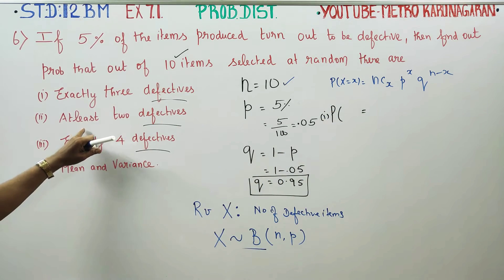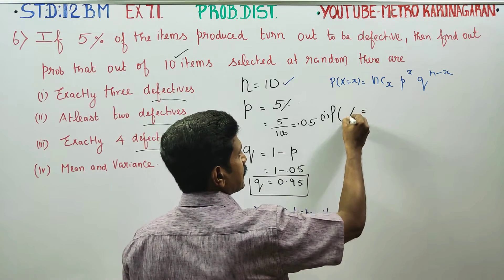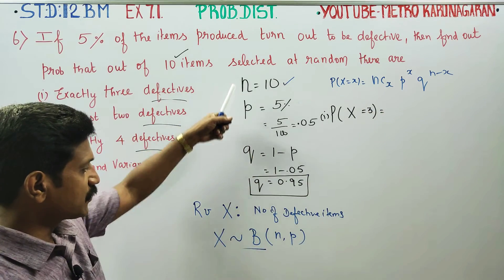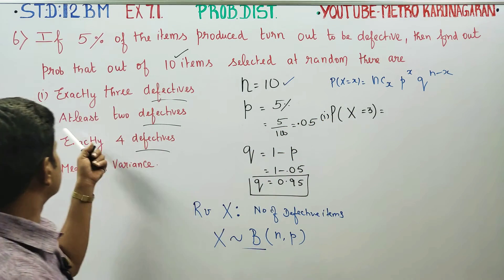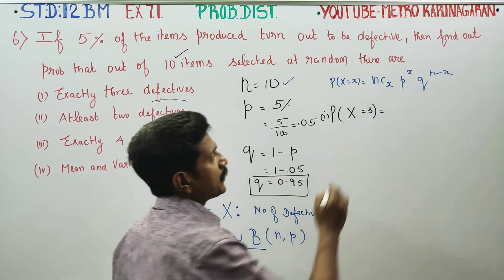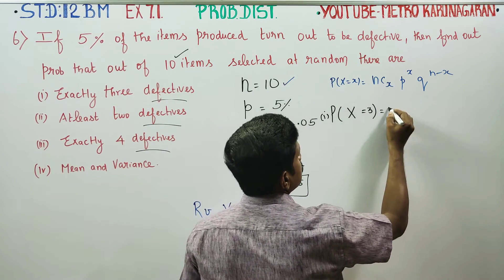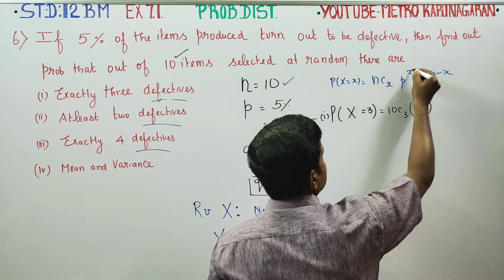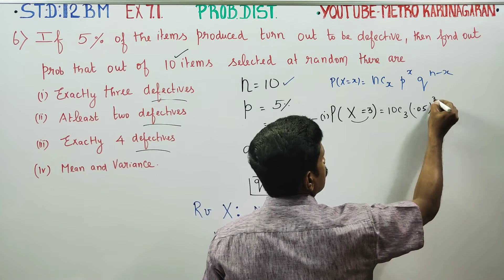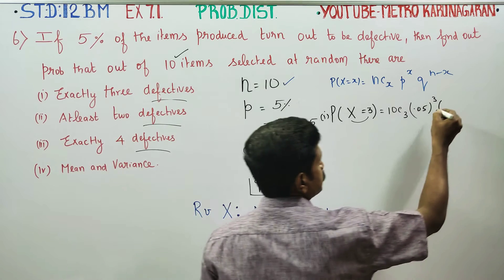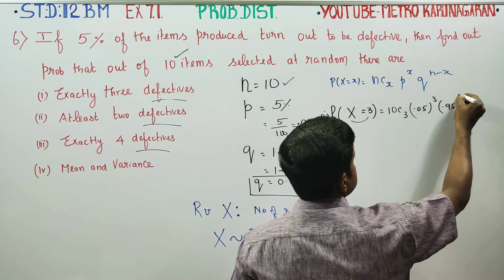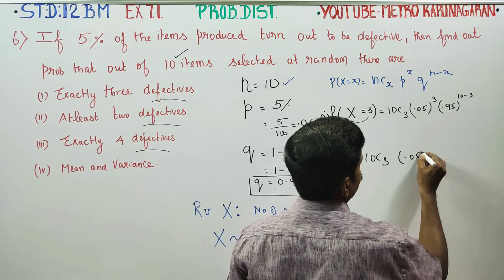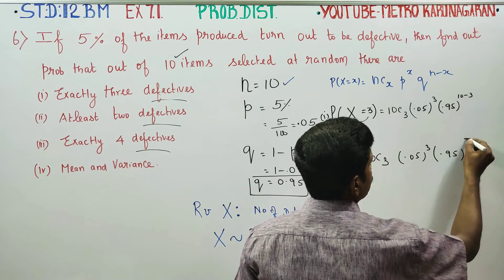The first subdivision is exactly three defectives, that is x equal to 3. Applying the binomial formula: n is 10, so we use 10C3 multiplied by p power x, where p is 0.05 to the power 3, and q is 0.95 to the power n minus x, that is 10 minus 3 equals 7.